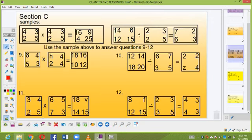In section C, I want us to look at the samples carefully before we proceed. 4 multiplied by 4 will give you 16. 2 multiplied by 2 will give you 4. 5 multiplied by 5 will give you 25. Now let's proceed to the next sample here.